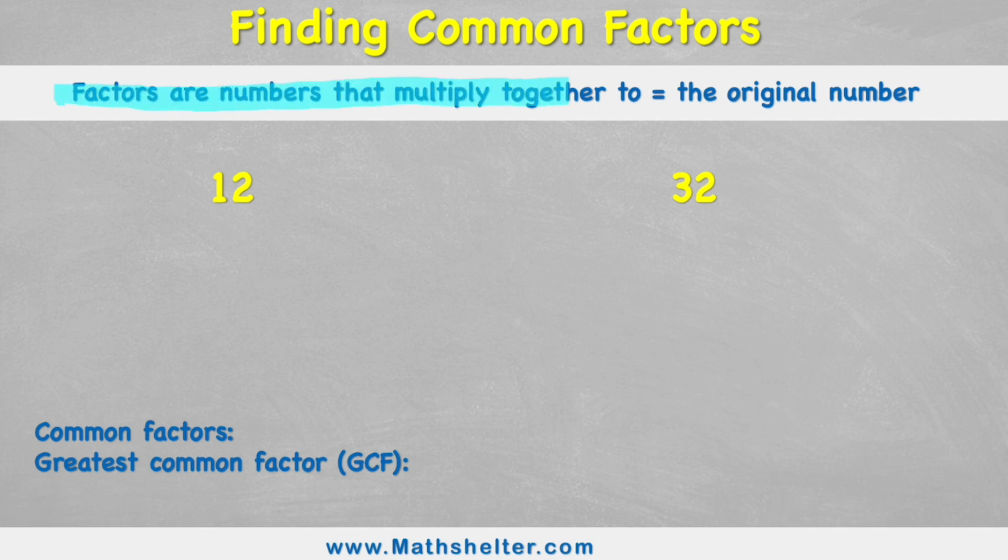So in this case we have two original numbers here, 12 and 32. But what does it mean by common? Well common means that two numbers share the same factor, they have them in common.